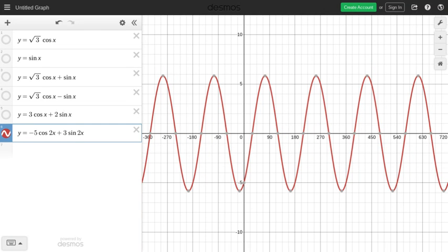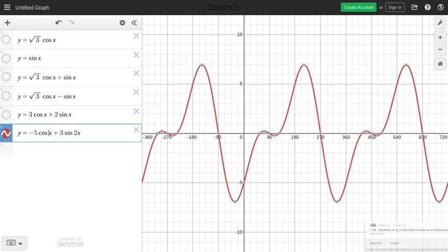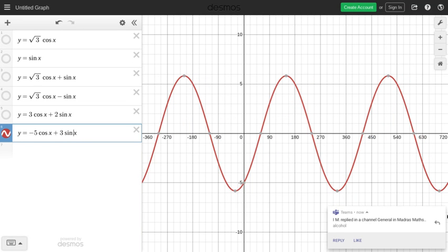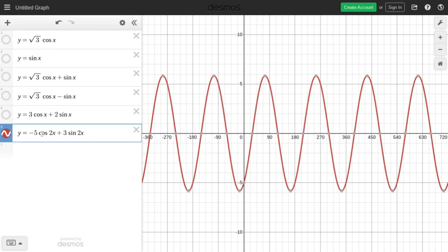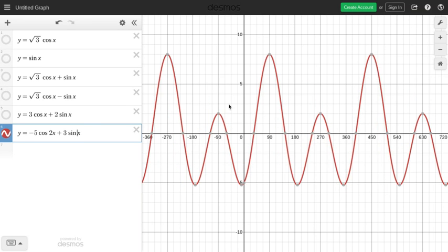It's a smooth curve again. Okay, so both single angles we get a nice smooth curve, both double angles we get a nice smooth curve, but a combination of single and double angles we do not get a smooth curve anymore.